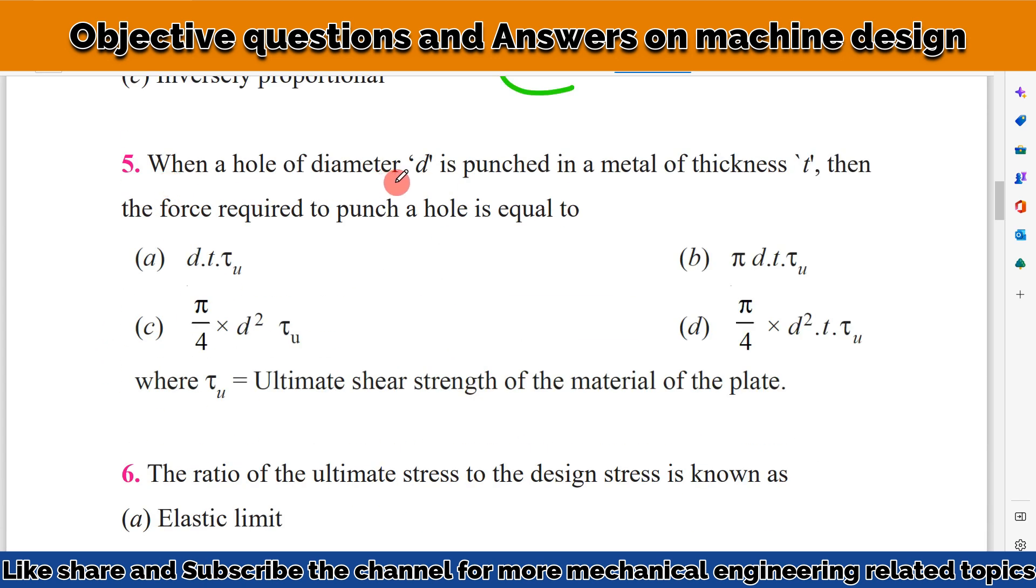When a hole of diameter D is punched in a metal of thickness T, then the force required to punch the hole is equal to? To calculate the punching force for the hole, we have a formula.